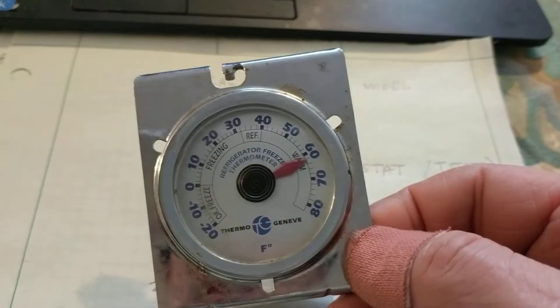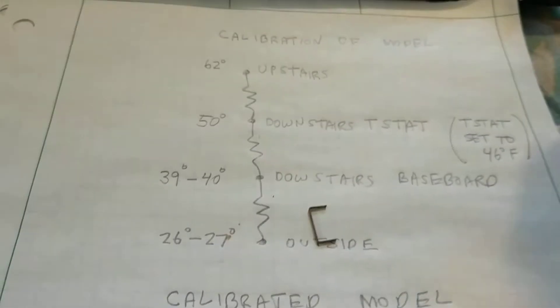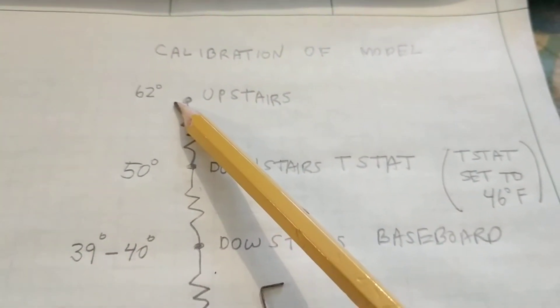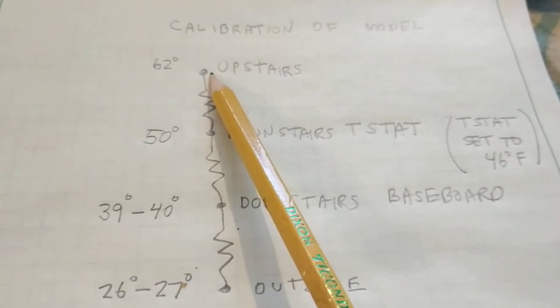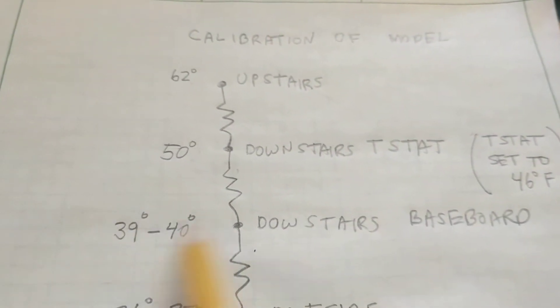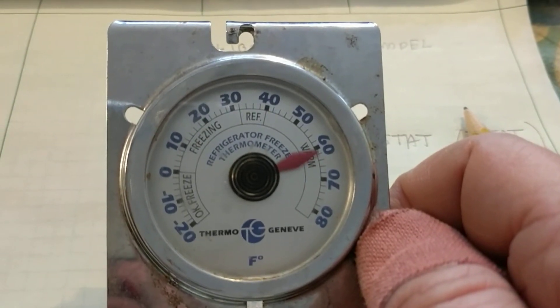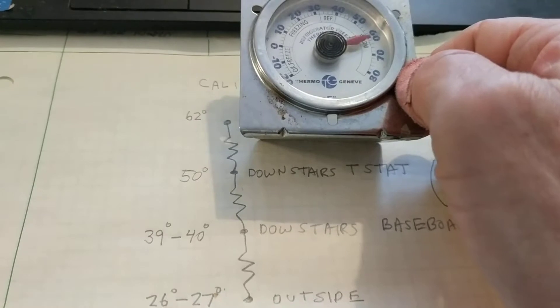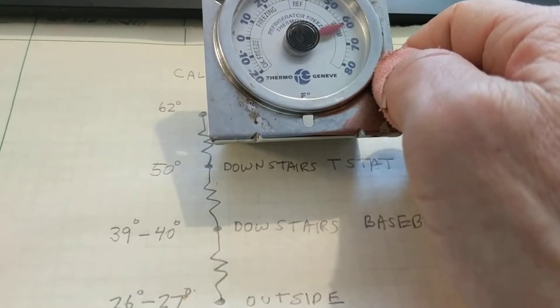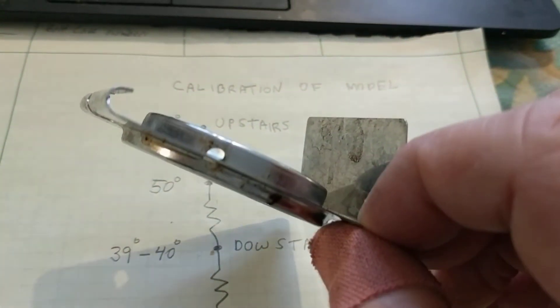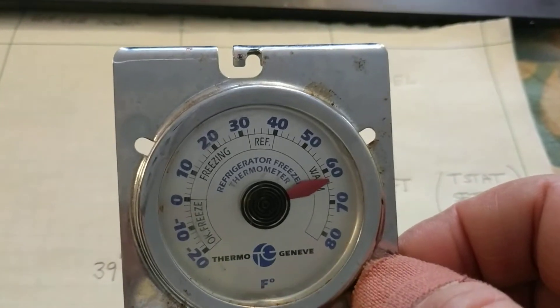The downstairs baseboard was measured with a portable refrigerator thermometer, since there's normally no thermometer there. The other temperatures come from the built-in thermostats. There's some error because this thermometer isn't perfectly calibrated — ideally you'd place it next to the upstairs thermometer and note any offset. Both are metal-coil thermometers with 2-degree gradations, so accuracy is limited to about 1 degree. For this demonstration we'll say the baseboard is between 39 and 40 degrees.